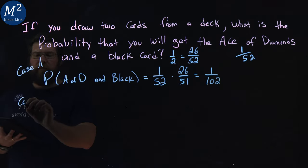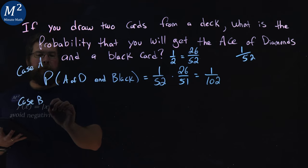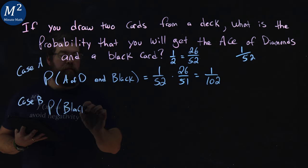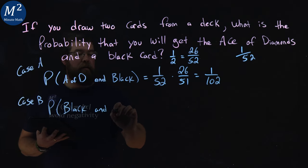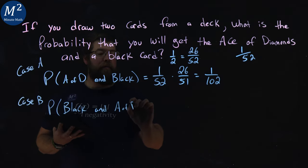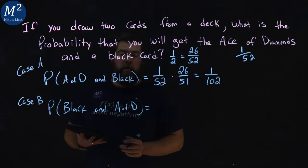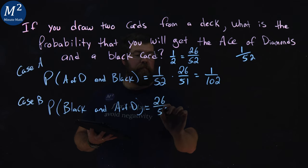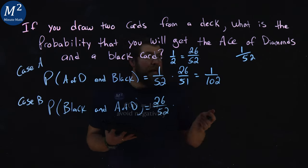Now, our second case is the other probability here. Black card first, and then our ace of diamonds. Well, the probability of a black card first, 26 out of 52, multiplied by now,